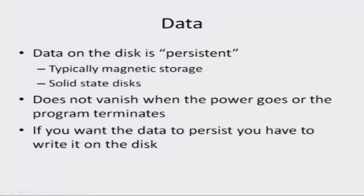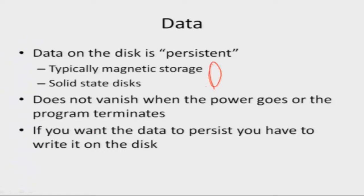Now, if you want the data to persist after the program finishes execution or when the computer is turned off, you will have to put it on the disk. If the data is sitting in the main memory, it will go away when you turn the power off or when the program terminates. The disk is a persistent data store; the main memory is not. Typically it's made of magnetic storage, or these days you get solid state disks, and when you put it on a disk you get persistence.